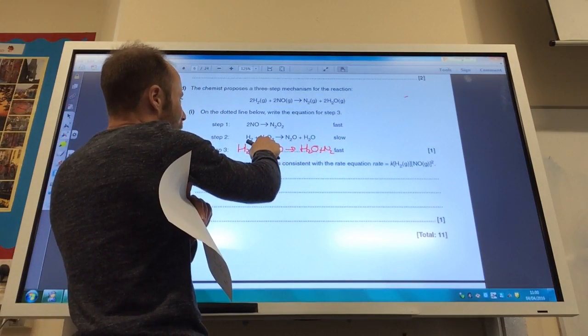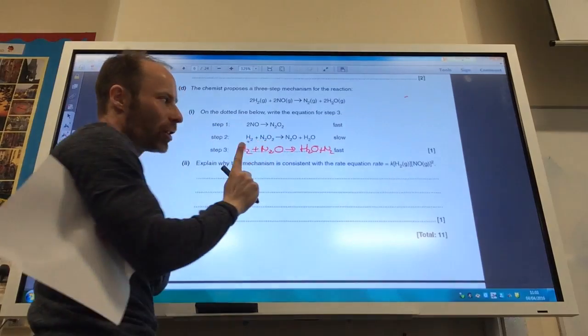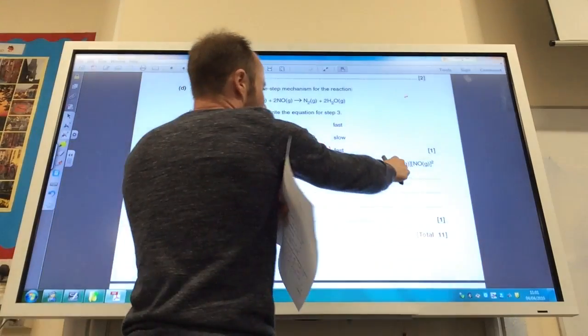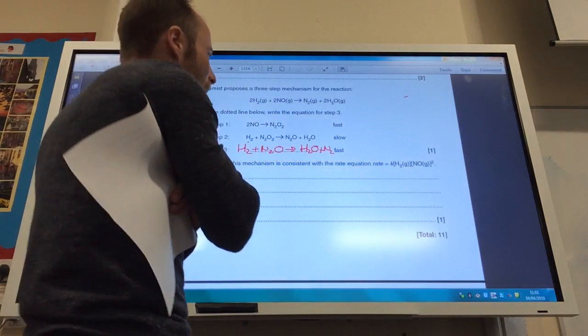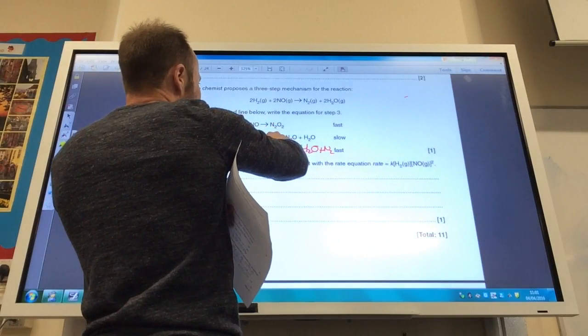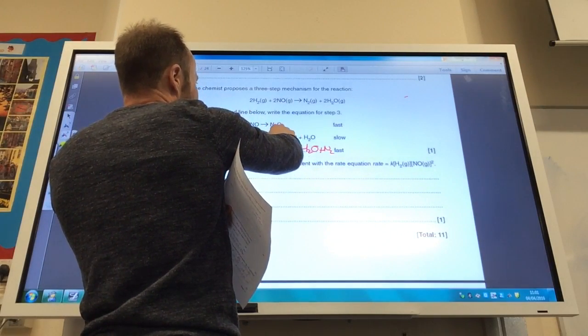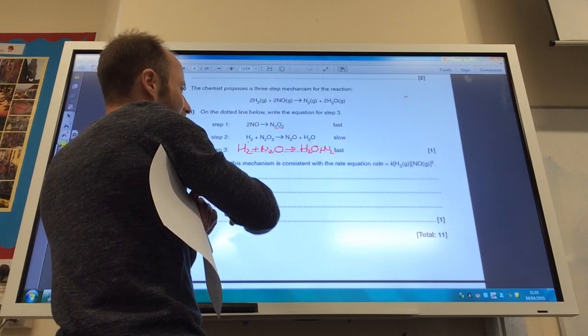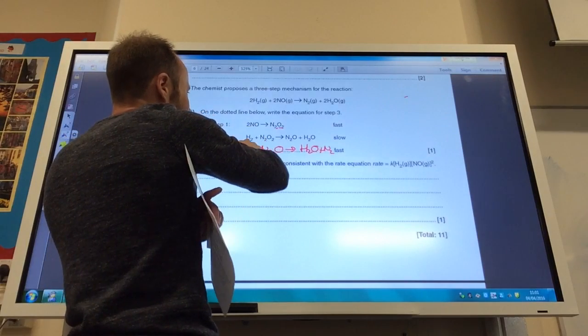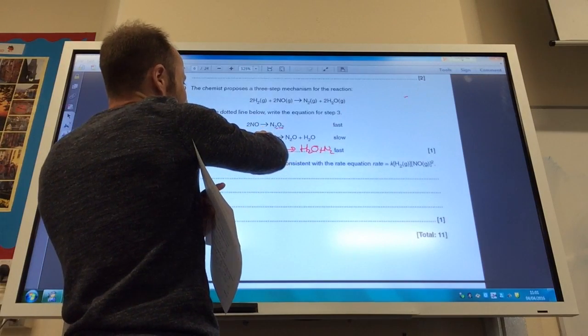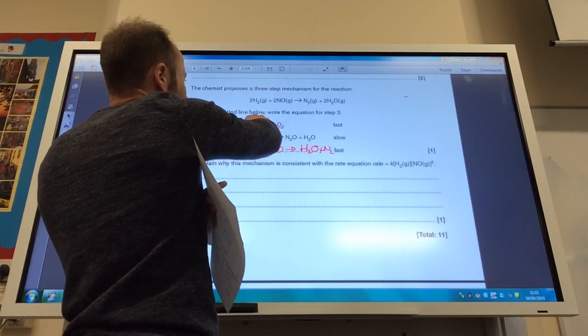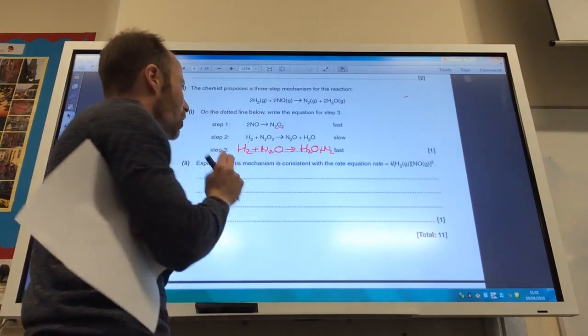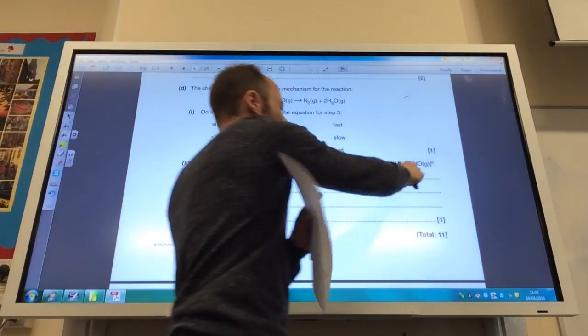And also two NO, and the two NO have formed this guy here, N2O2. So it is consistent with that rate equation because it involves one H2 molecule and an N2O2 molecule, which is being produced by two NO molecules here.